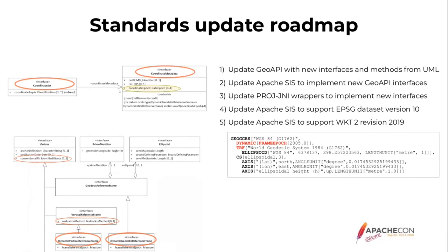PROJ also has a plan for a similar upgrade. The red elements shown are examples of new items we will need to support. In this case, PROJ is in advance — PROJ already supports the latest well-known text revision, but not yet the new dynamic elements as far as I know.